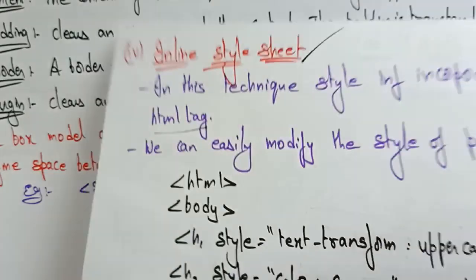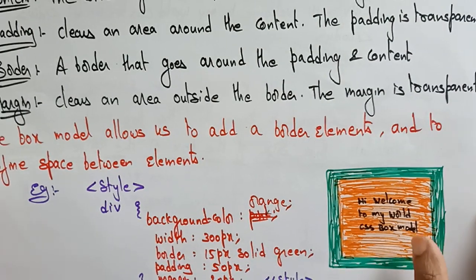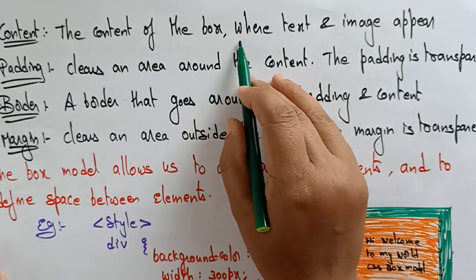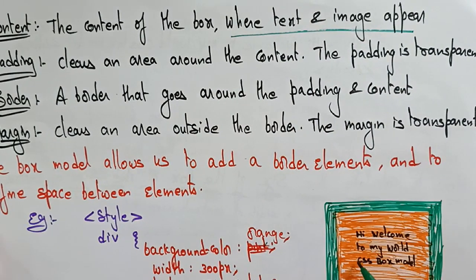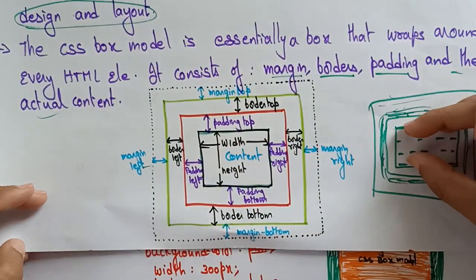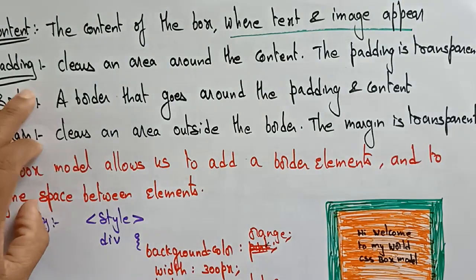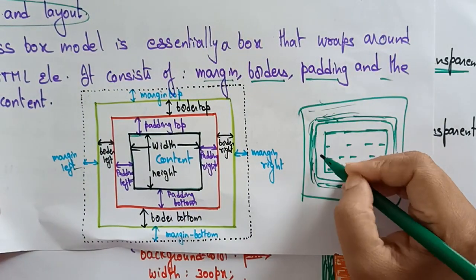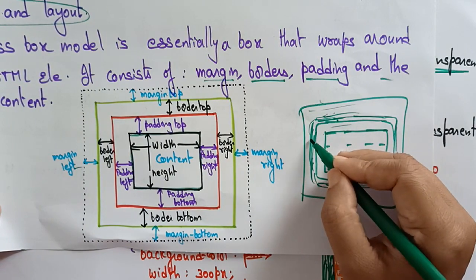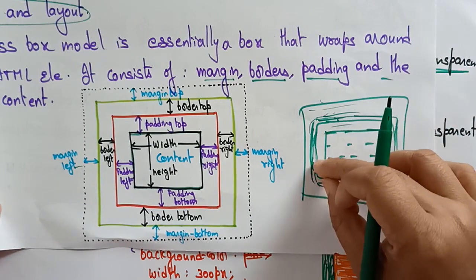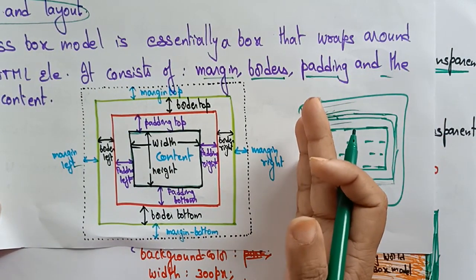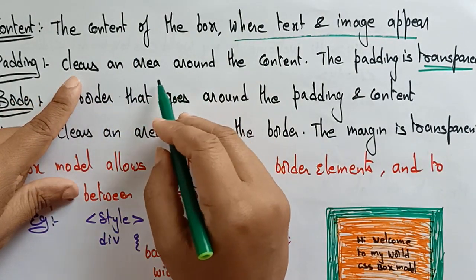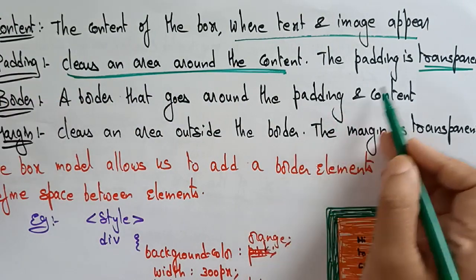So first about the CSS box model, let me explain with an example. Before going to the example, I want to explain what the content consists of, what padding, border, and margin are. Content: the content of the box is where the text and image appear — that is the place where exactly the text and image will appear. Padding: it clears an area around the content. The padding is transparent — it wants to make some transparent space so the area looks neat, with space shown between the borders and the messages. It clears an area around the content — that is padding, and the padding is transparent.